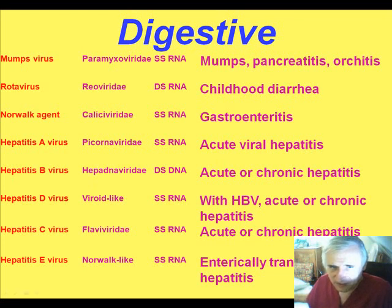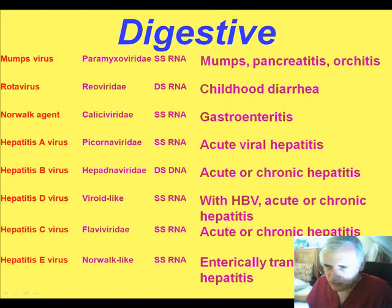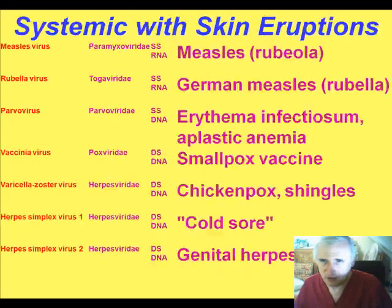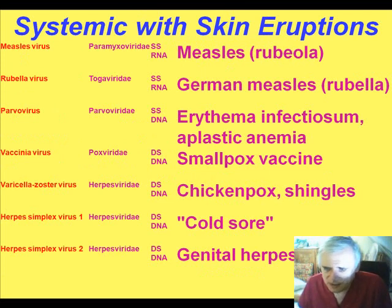Note that hepatitis A, B, C, D, and E are not at all in the same taxonomic classification — they are all different viruses. Most of them are RNA; hepatitis B is DNA and double-stranded, while most others are single-stranded RNA. They all express a pattern of acute or chronic hepatitis but have completely different clinical behavior. We'll continue with skin viruses in the next block — thank you very much.